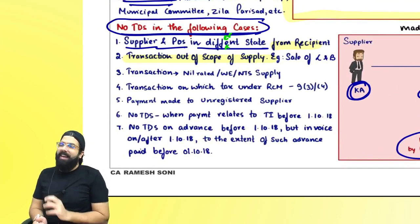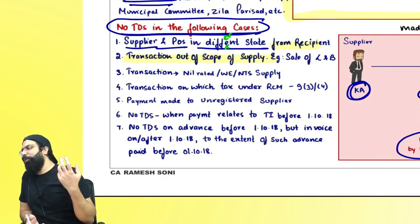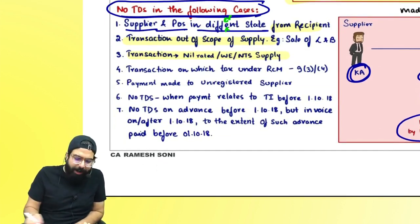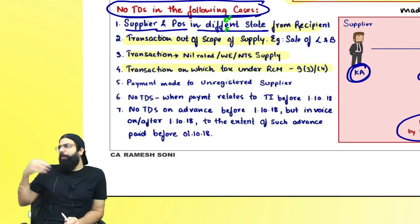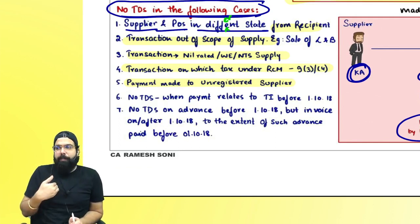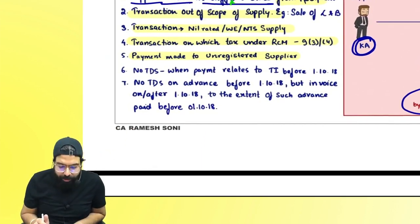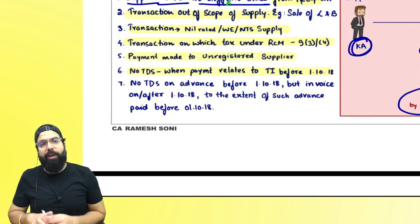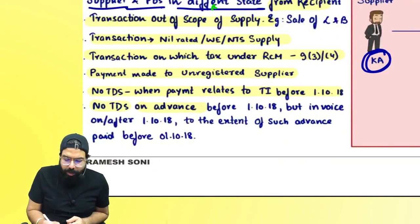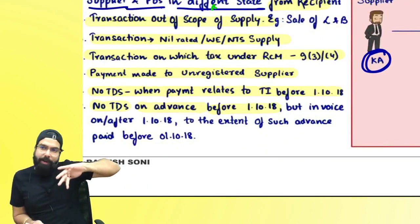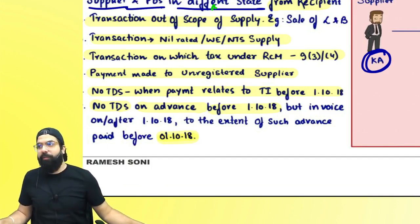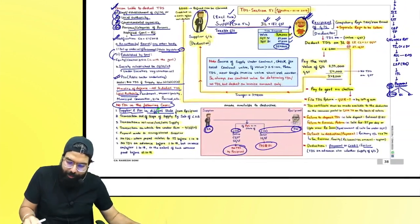No TDS on transactions that are out of scope, such as sale of land and building — any Schedule 3 item or Section 7(a)/(b) item that is neither supply of goods nor supply of services. No TDS on nil-rated, wholly exempt, or non-taxable supplies. No TDS where the total amount is payable under RCM, or where payment is made to an unregistered supplier (as they cannot receive the credit). No TDS on payments relating to a tax invoice issued before 1/10/2018, when TDS provisions became effective, and no TDS on advances given before 1/10/2018.